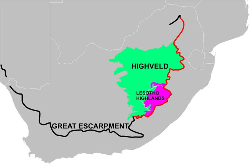The latter mountainous region is, however, not generally referred to as Highveld, whose boundary at this point runs just inside the Lesotho-Free State border, at about 2,000 m. From its eastern boundary, the Highveld slopes gently downwards to be bounded by the Great Karoo to the south, the Kalahari Desert to the west, the Bushveld to the north, the Mpumalanga Lowveld to the northeast, KwaZulu-Natal to the east, and the Lesotho Highlands, or mountains, to the southeast.